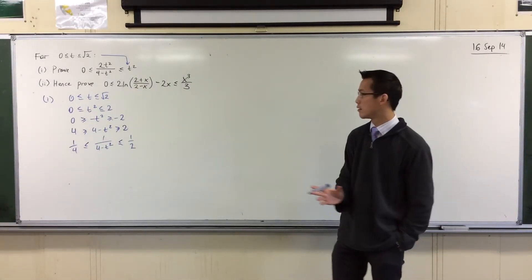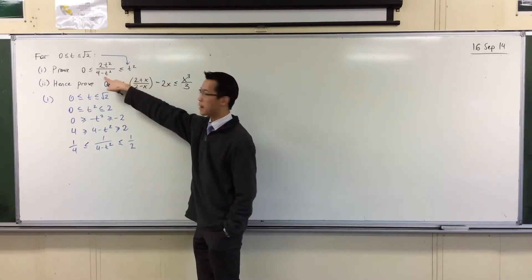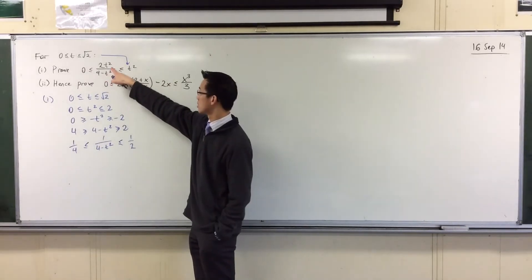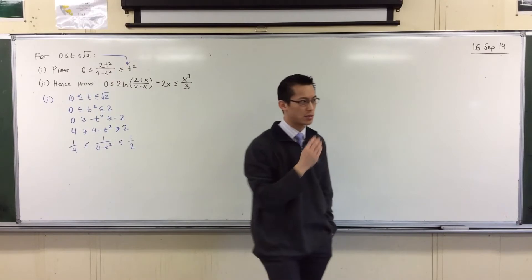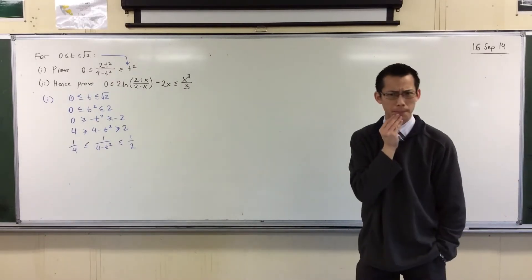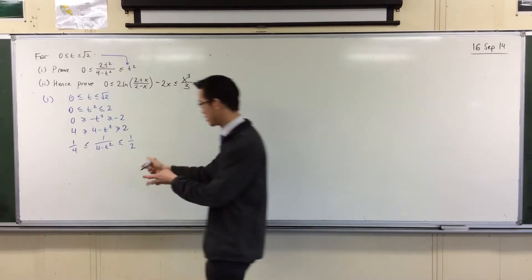Okay? I'm very, very close to what I need. Look, I've got my one over four minus t squared there. The only difference is I needed two t squared there. I can multiply through everything by two t squared. Why is that? Because two t squared is positive, right? So I'm just going to go ahead and do that.